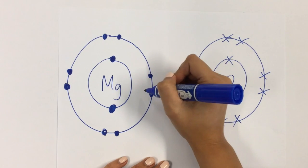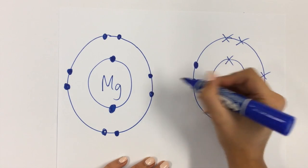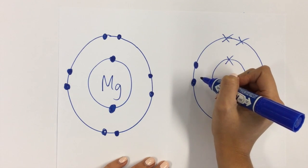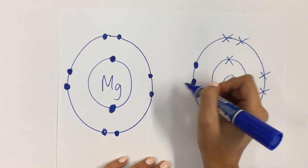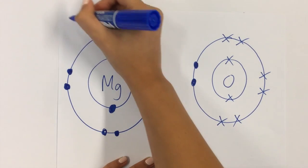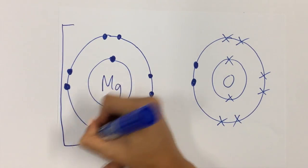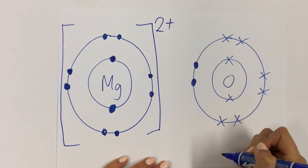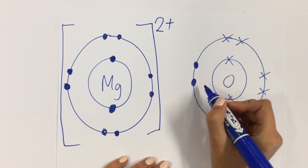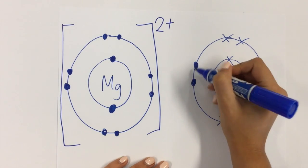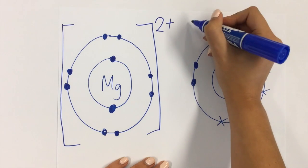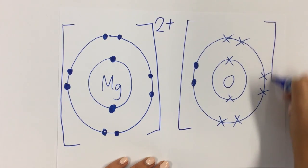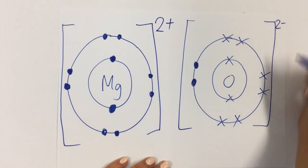The magnesium lost two electrons. If it's lost two electrons, that means it's lost two negatives, which makes it overall positive. So the magnesium overall has a 2+ charge. It lost two negatives. The oxygen gained two negatives, gained two electrons, so it becomes a 2- charge.